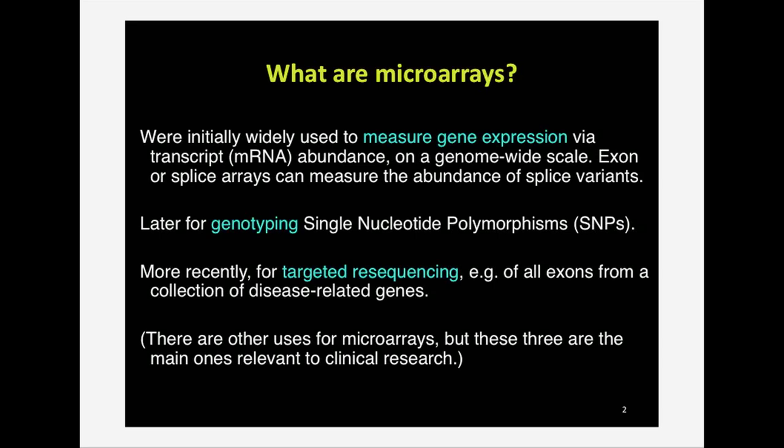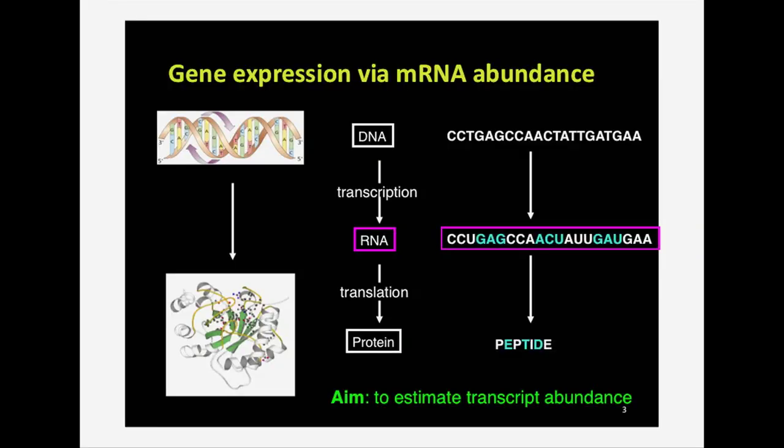There are protein microarrays and other sorts which are not anywhere near clinical use. This is a generic picture — DNA, RNA, protein. The point of this picture is that we are measuring the abundance of mRNAs, which are the purpley bits here, which, apart from some 3' and 5' untranslated regions, will be in triplets, which later get translated into peptides — into amino acid sequences. So expression microarrays are measuring abundance of mRNA sequences.